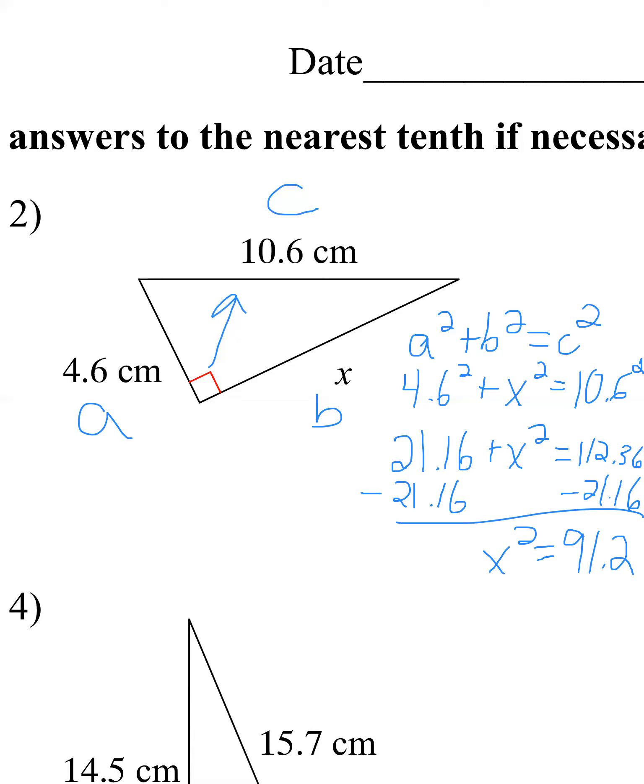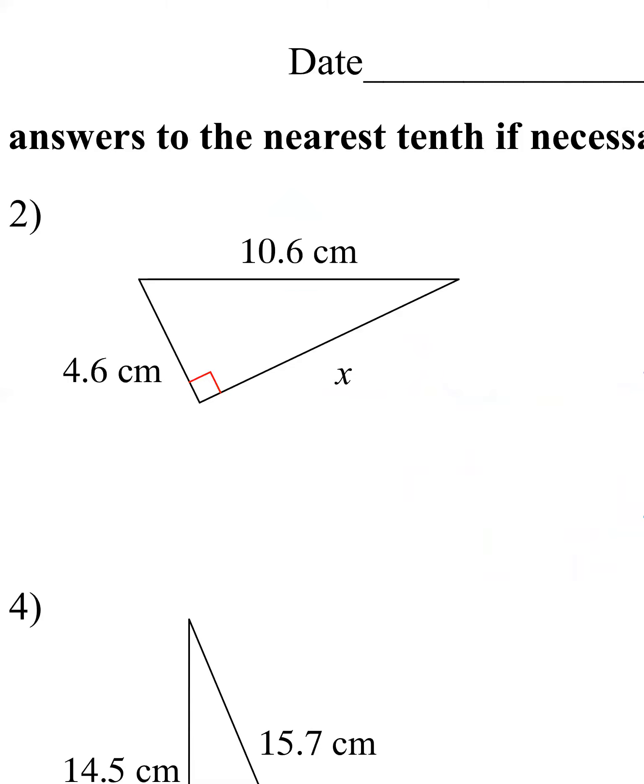So it looks like x² is going to end up being 91.2, and then just like always, the last thing I have to do is sneak in and do those square roots. So x is going to be 9.5 centimeters, and that is a reasonable answer because C is supposed to be the biggest and it still is. So 9.5 is certainly reasonable.